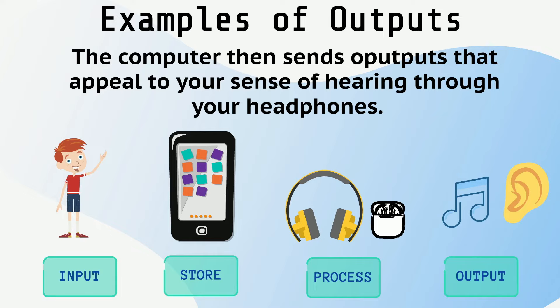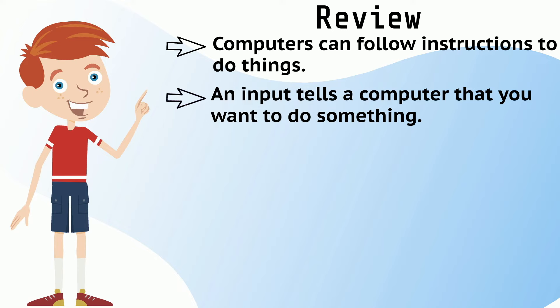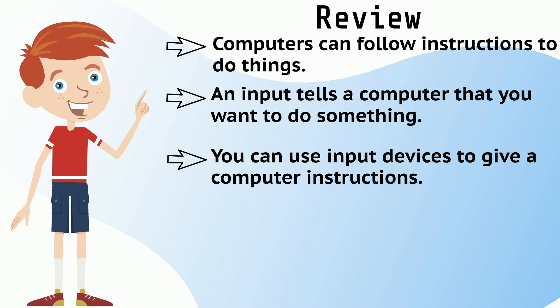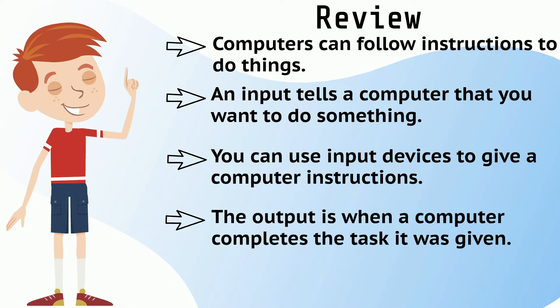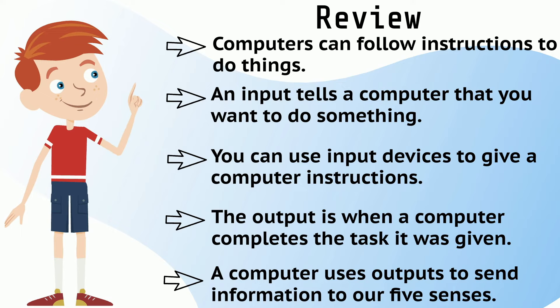Okay, let's review what we have learned. Computers can follow instructions to do things. An input tells a computer that you want to do something. You can use input devices to give a computer instructions. The output is when a computer completes the task it was given. A computer uses outputs to send information to our five senses.